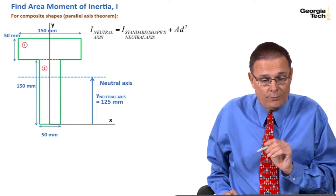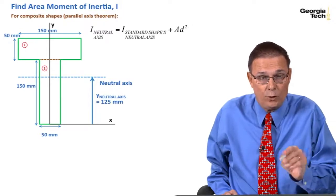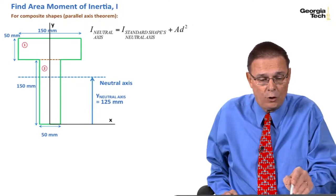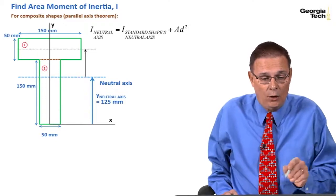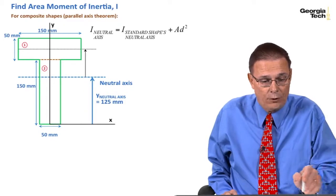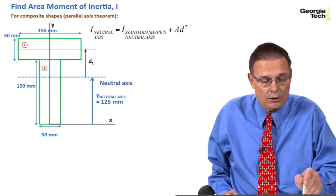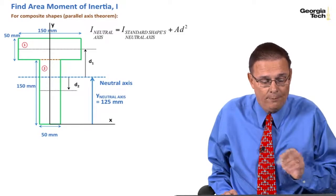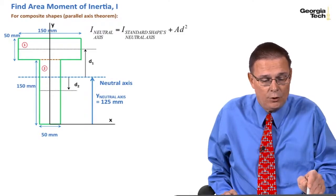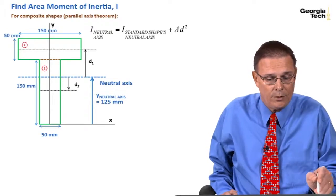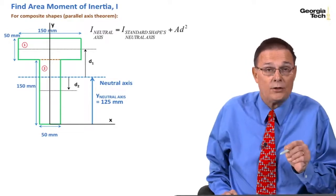There's my neutral axis. Here's my formula using standard shapes for the total neutral axis. And so, this will be my first standard shape, the rectangle at the top. The distance from the neutral axis I'll call d1. The distance to the neutral axis of the other composite or standard shape is d2.